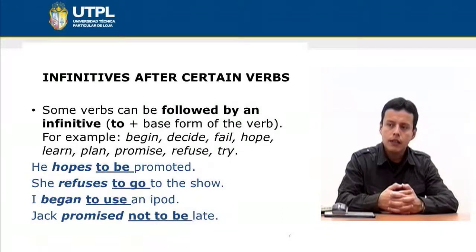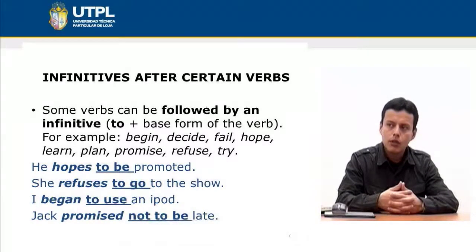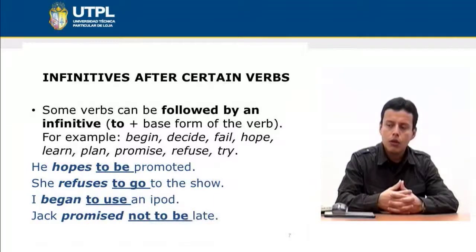The last example — 'Jack promised not to be late' — shows the negative form of the infinitive. As you know, an infinitive is 'to' plus the base form of the verb, and the negative form is 'not' plus the infinitive.